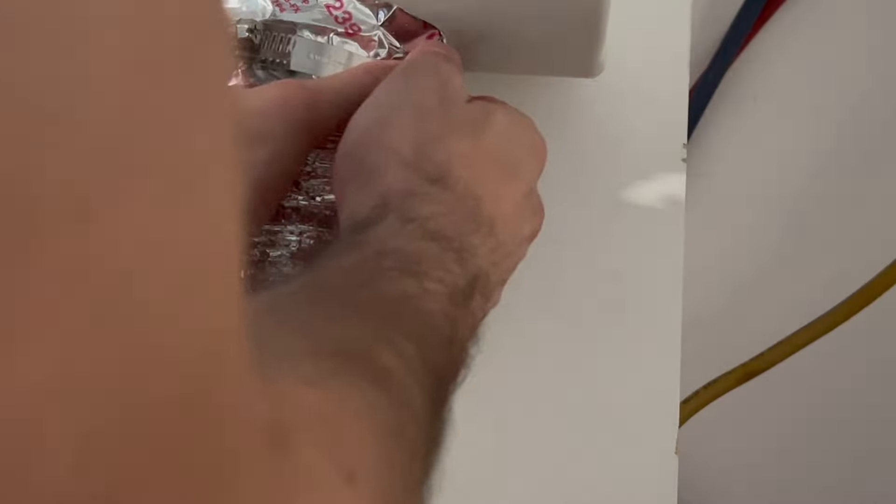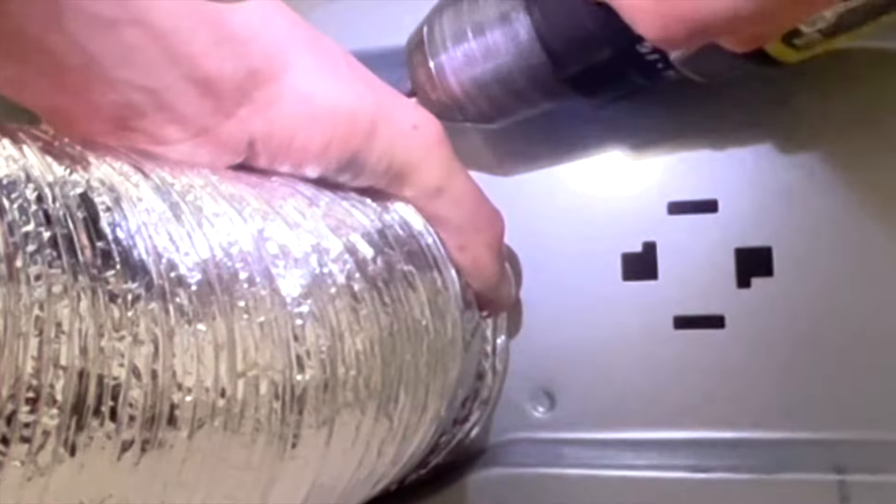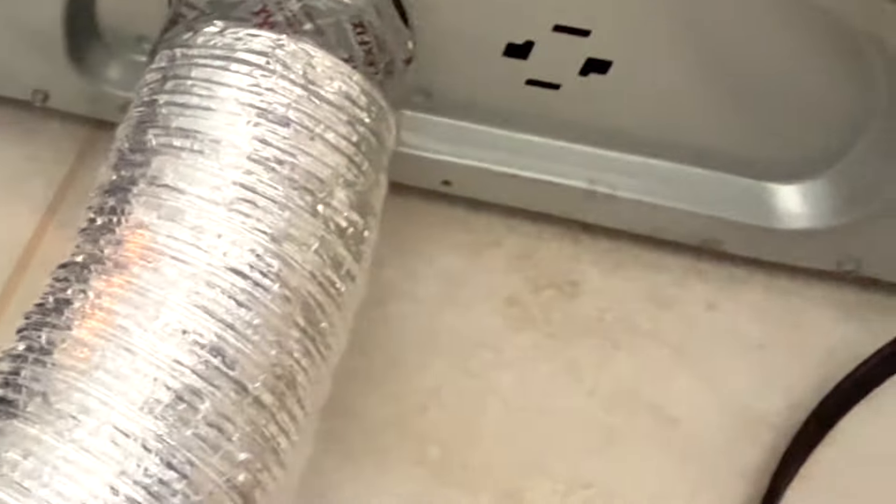So there it is on there nicely. Now this one's a little tricky - we're gonna hold the vent in place and hold the clamp in place, and then use our drill. So we're gonna tighten it up nice and tight, but don't overtighten it. Now it is on there good.